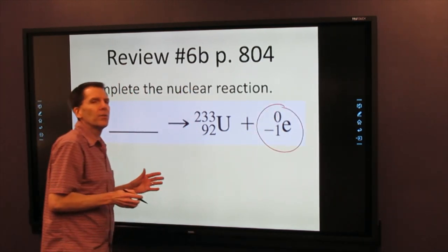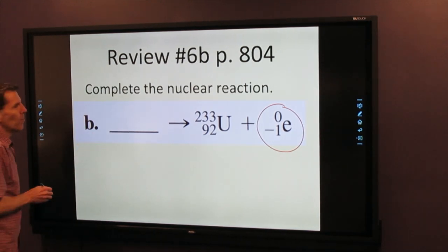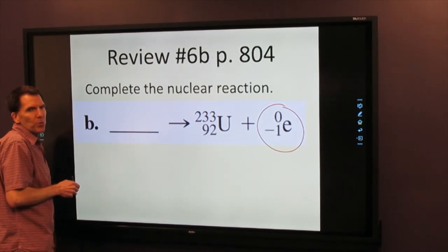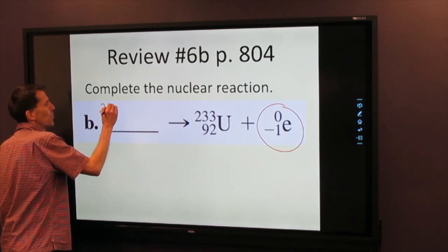If you get your periodic table, everything's going to have to balance. So let's look at the top row. The mass is 233 over on the right, so it's still 233 on this side.